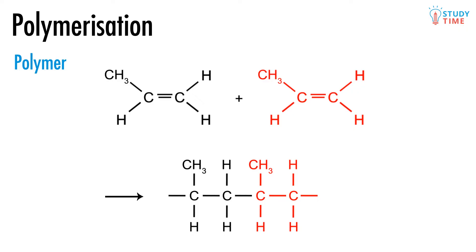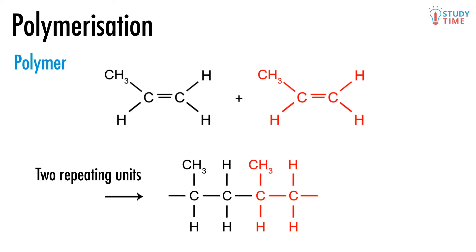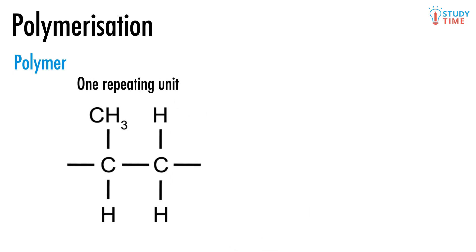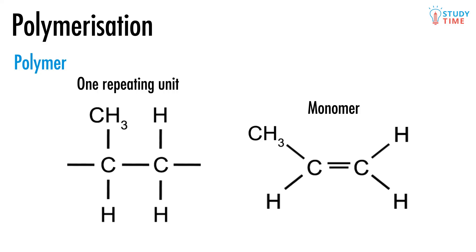What we've drawn here is called two repeating units of the overall polymer. The polymer, of course, is going to be made up of millions of these repeating units, so we usually don't bother drawing all of them. That means that one repeating unit of the polymer would simply look like this.